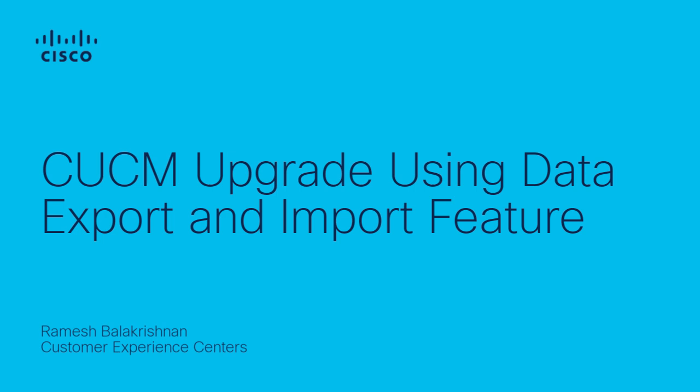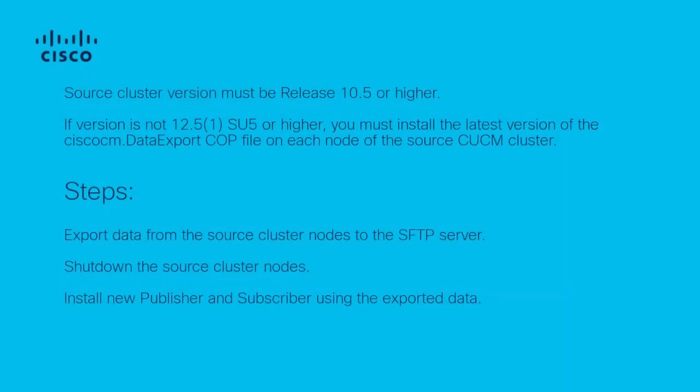The CUCM cluster has two nodes: one publisher and one subscriber. Your source cluster version must be release 10.5 or higher. If your source cluster version is not release 12.5.1.su5 or higher, you must install the latest version of the Cisco cm.data export COP file on each node of the source CUCM cluster.